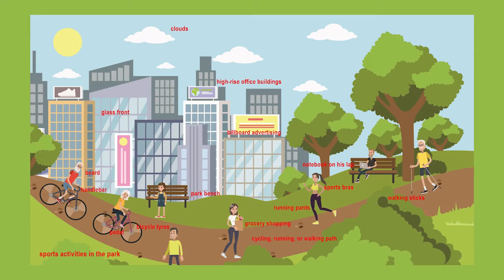On the left you can see an elderly couple and they are riding their bikes. They're riding downhill with their hands on the handlebar and their feet on the pedals. And maybe they're touring bikes because the bicycle tires look quite large.